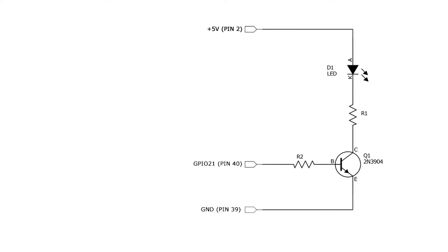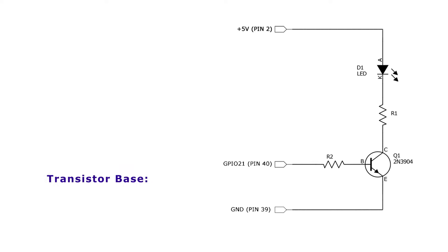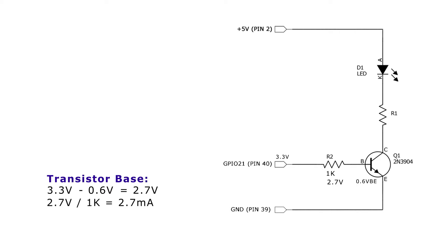First, let's calculate R2. From the datasheet for the 2N3904, the base-to-emitter diode voltage drop is between 0.6 and 0.64 volts. Our GPIO pin supplies 3.3 volts, so 3.3 volts minus 0.6 volts leaves 2.7 volts across R2. I've selected 1K for simplicity. Taking 2.7 volts divided by 1K gives us 2.7 milliamps from the base driven by the GPIO pin.